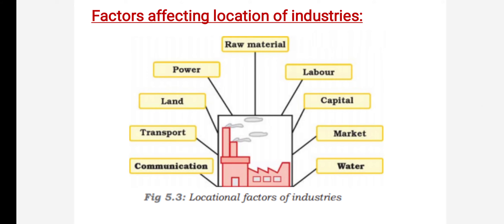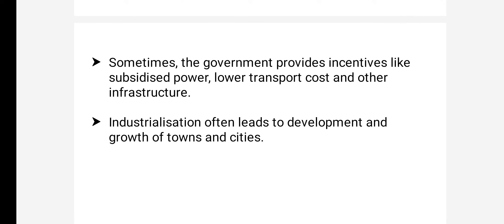Industries are usually situated near rural areas because rural areas are the most vulnerable — there is less growth — so industries are established there to develop such areas. The government also provides incentives like subsidized power; for example, if they consume 100 units, they need not pay the full cost. Likewise, lower transport costs and other infrastructure subsidies are provided, which is why industries may be located in backward areas.